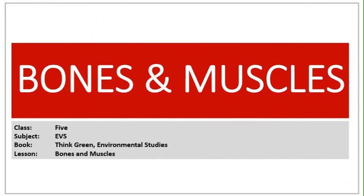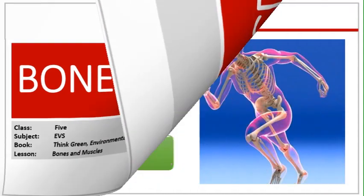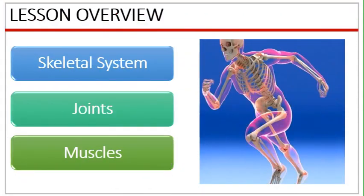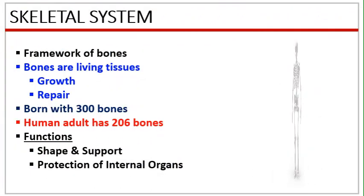Good morning students. Today we will start with lesson 2: bones and muscles. Please refer to page 14 of the textbook. In this lesson we learn about the skeletal system, i.e. the framework of bones, how these bones are joined to each other i.e. the joints, and lastly how we are able to move these bones i.e. the muscles and its types. So let's get started with the first topic i.e. the skeletal system.